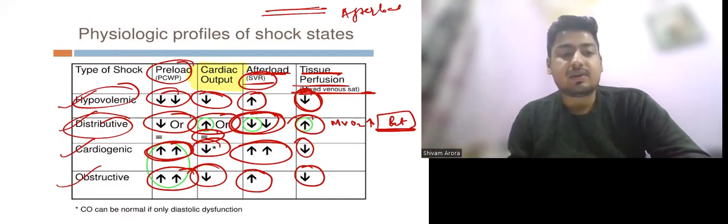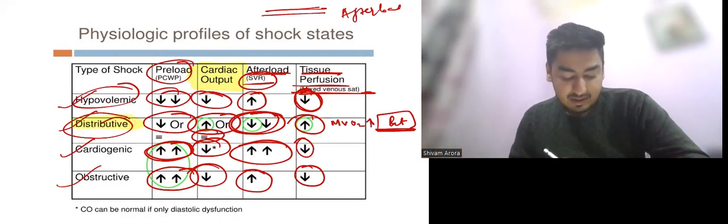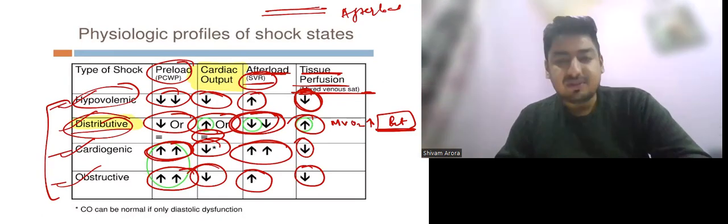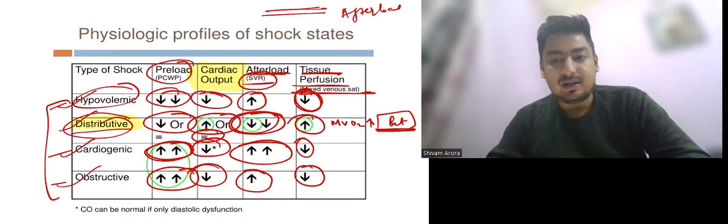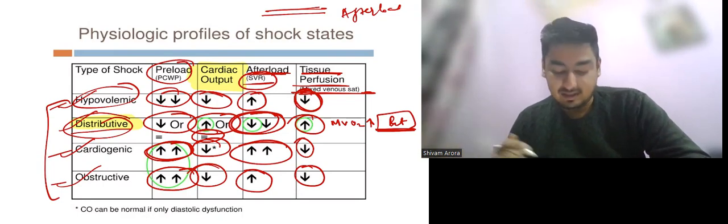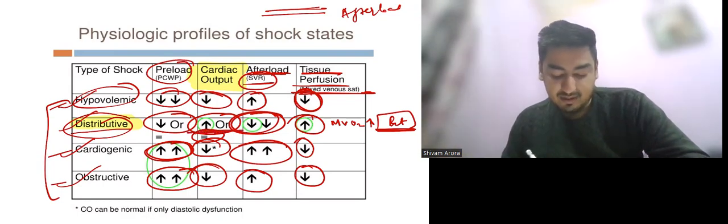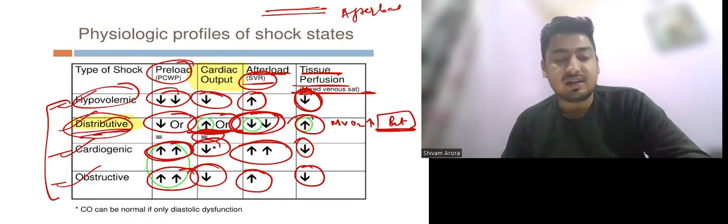The most important thing to note is that distributive shock is clearly different from all these three types of shock. The pathophysiology of distributive shock involves increased vasodilation, so systemic vascular resistance decreases and cardiac output increases. Distributive shock means everything is different from all these three types of shock.